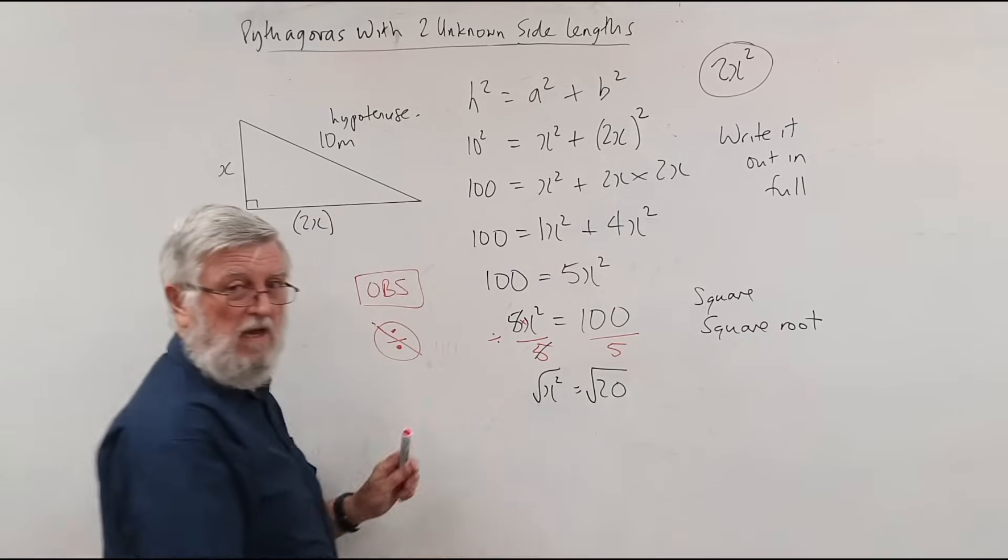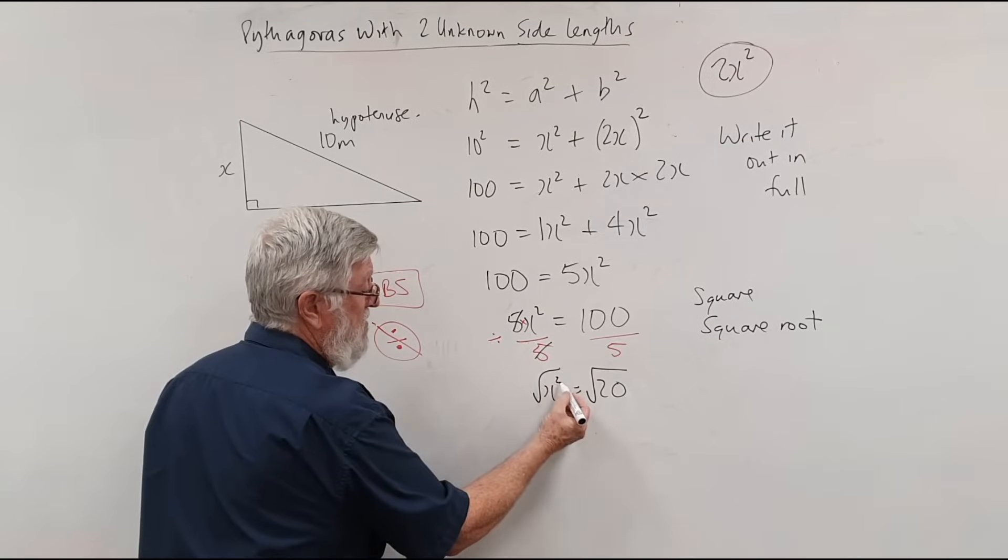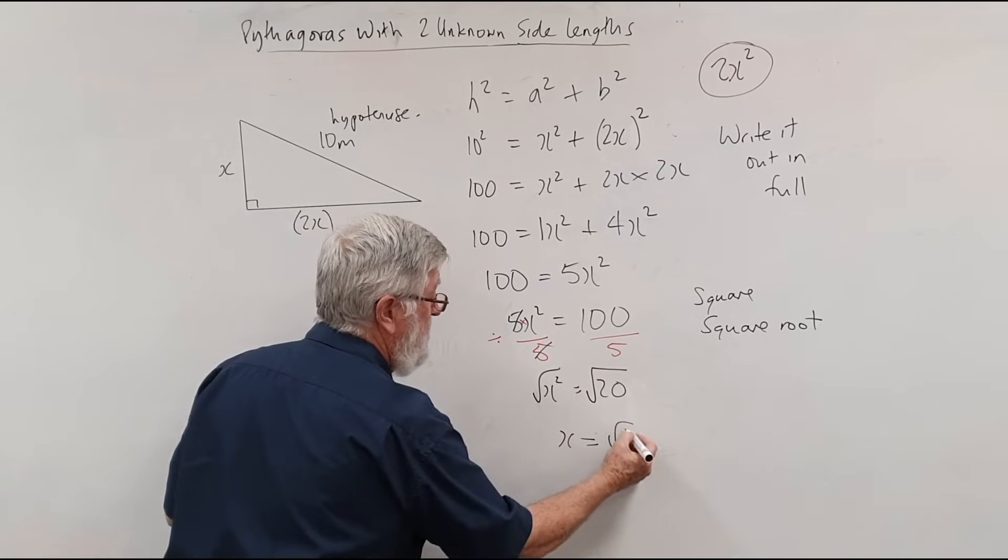So if I take the square root of this side, I use the square root of both sides. So the square root gets rid of the square. And there's the answer to the question.